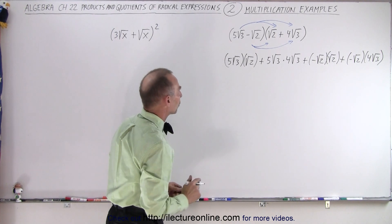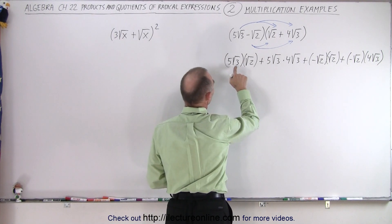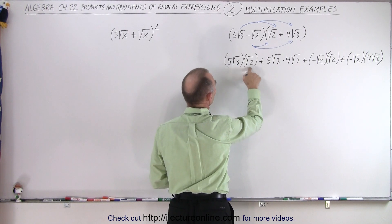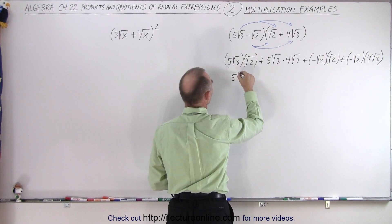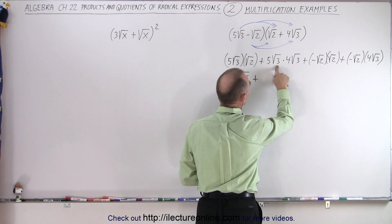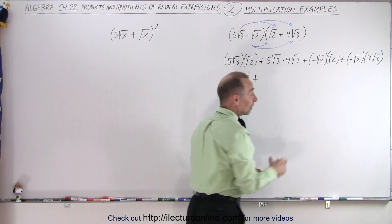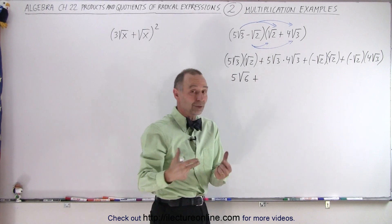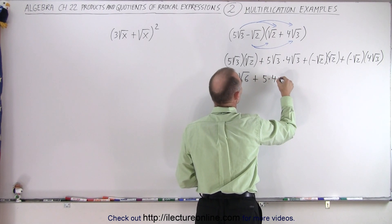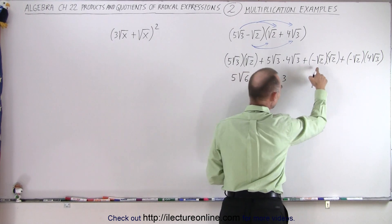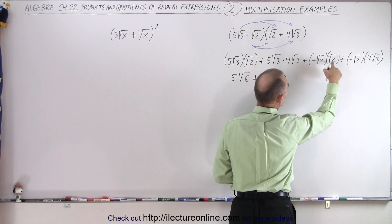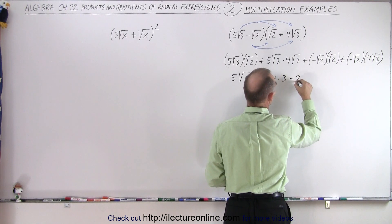Now we can work each product one at a time. Here we have the square root of three times the square root of two, which gives us the square root of six, so five times the square root of six. Then we have the square root of three times the square root of three, which is simply three, so we end up with five times four times three. Here we have a negative and the square root of two times the square root of two, which is simply two, so negative two.